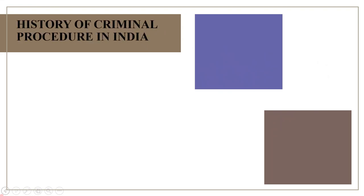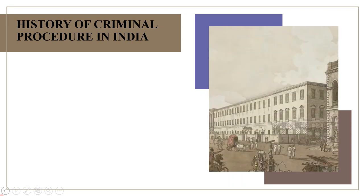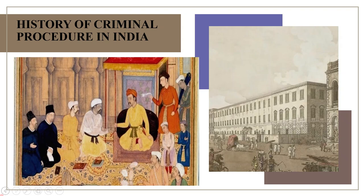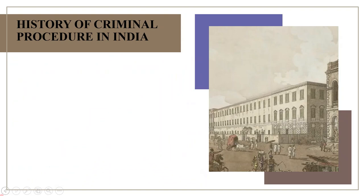Here is the history of criminal procedure in India. In ancient India, kings with the advice of priests used to solve cases of crimes in courts or sabhas and among tribes. Leaders of tribes settled the disputes of crimes in public. Under the Mohammedian rule, criminal law was being administered in Adalat according to the Holy Quran.